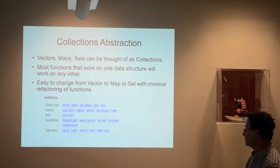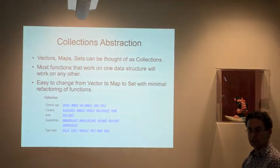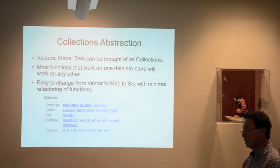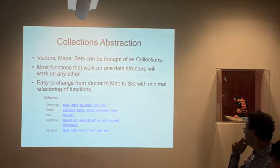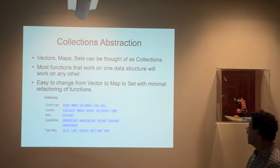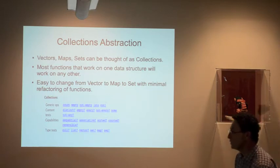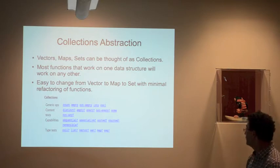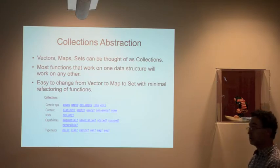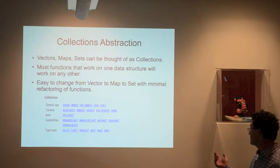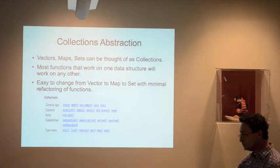There's a cheat sheet on Clojure.org that organizes functions into groups. For collections there's count, empty, non-empty, into, and conj. You can also do type tests with functions like coll? (is it a collection?), list?, vector?, set?, and so on — by convention these predicate functions end with a question mark.